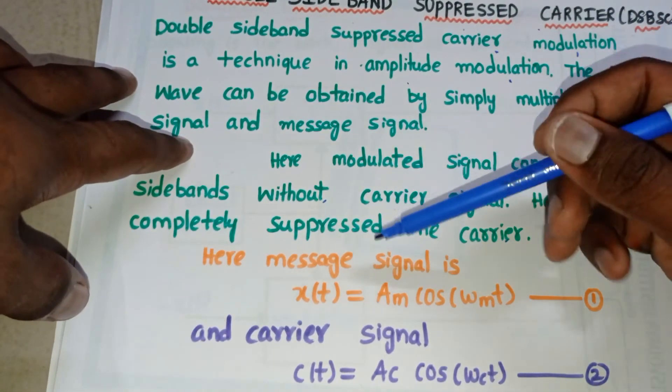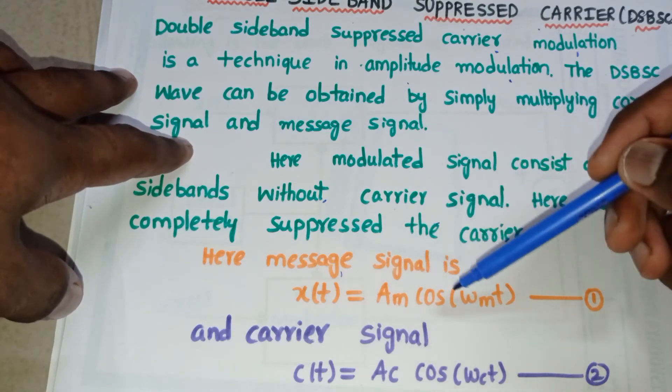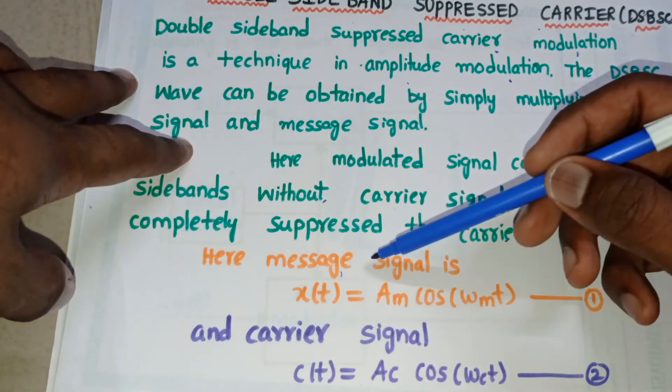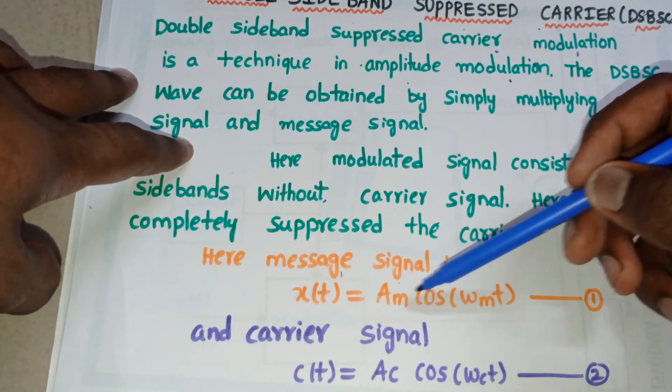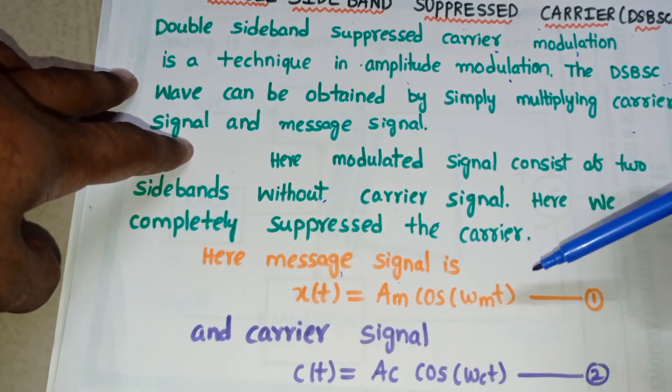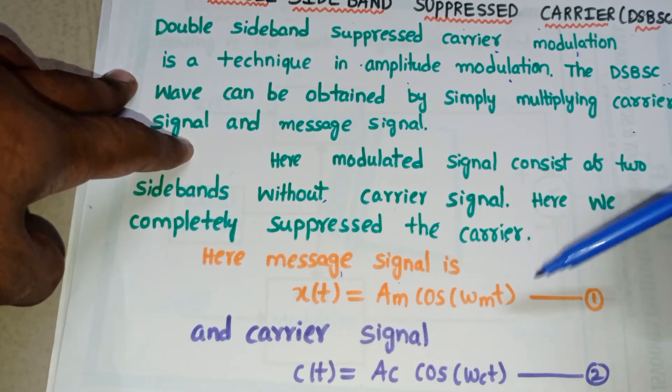Let's see the message signal. Message signal X(t) equals Am cos(ωmt). Message signal is also known as modulating signal. Am is the amplitude of message signal, cos(ωmt) is the frequency of message signal. Treat it as equation number one.